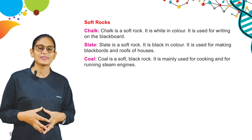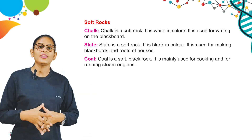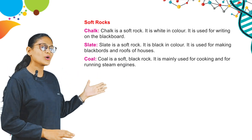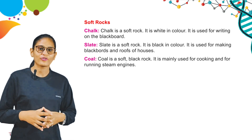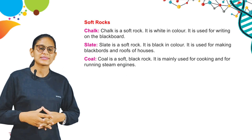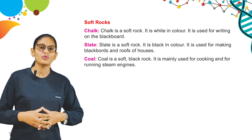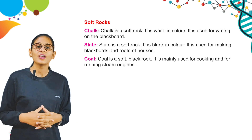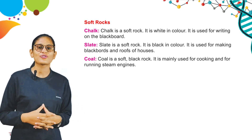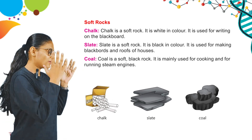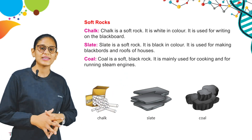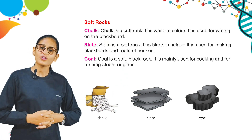Slate is used for making blackboards and roofs of houses. Now we have coal. Coal is a soft black rock. It is mainly used for cooking and for running steam engines. Here are some pictures — chalk, slate, coal. These are the different types of soft rocks.